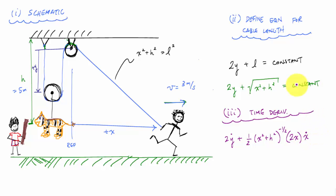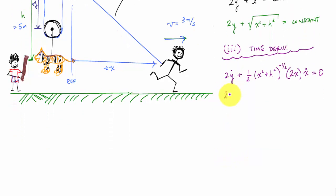And all this, the derivative of a constant is equal to zero. And here if I call these velocities, I would have, another way I could write this is just simply 2 vy plus one half x squared plus h squared to the minus one half times 2x vx equal to zero.